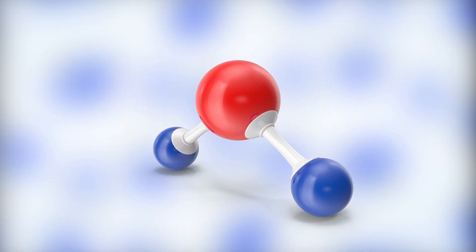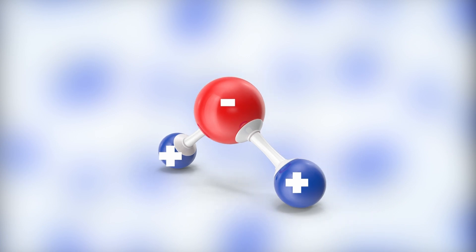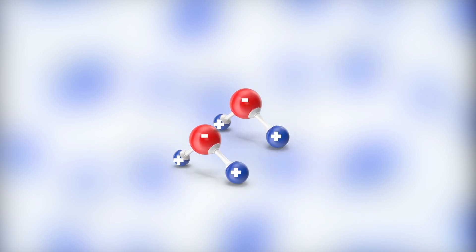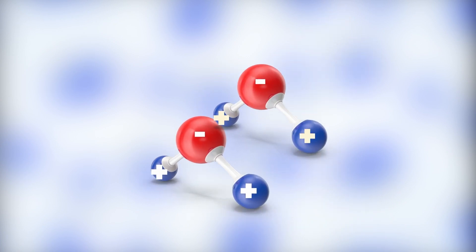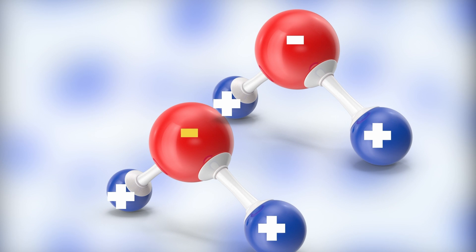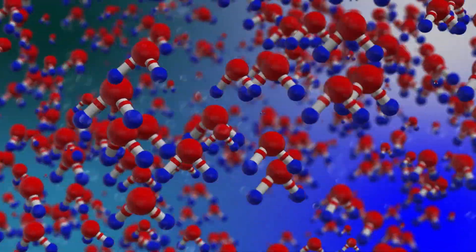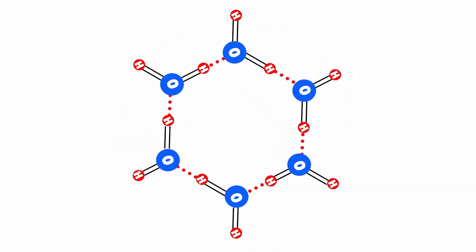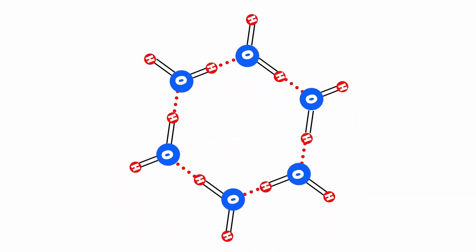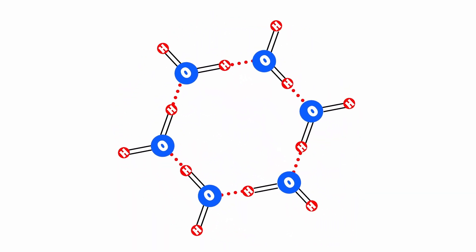This arrangement of a water molecule creates a positively charged side near the hydrogen atoms and a negatively charged side near the oxygen atom. When two water molecules come close together, the positive side of one molecule clings to the negative side of the other. When this happens on a large scale with millions of water molecules, what you get is a unique structure that accounts for some of the chemical properties of water.